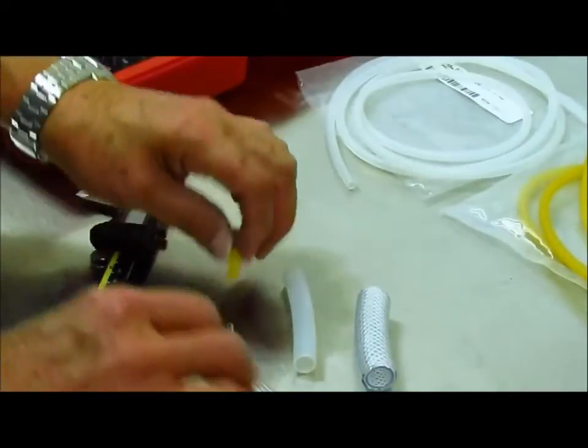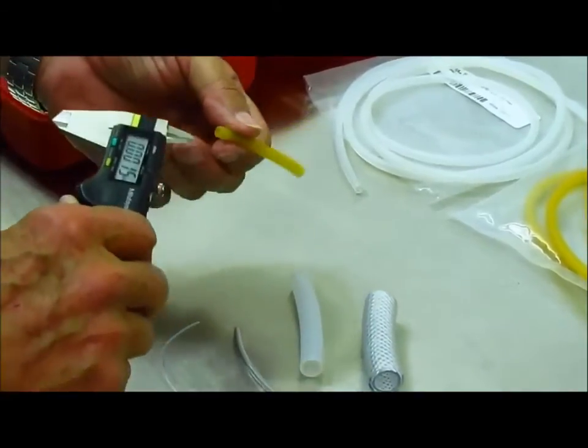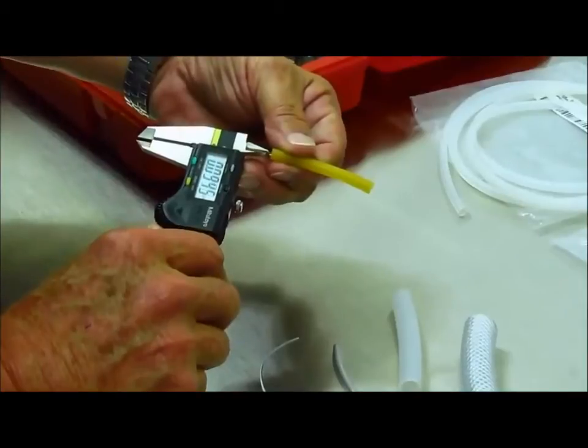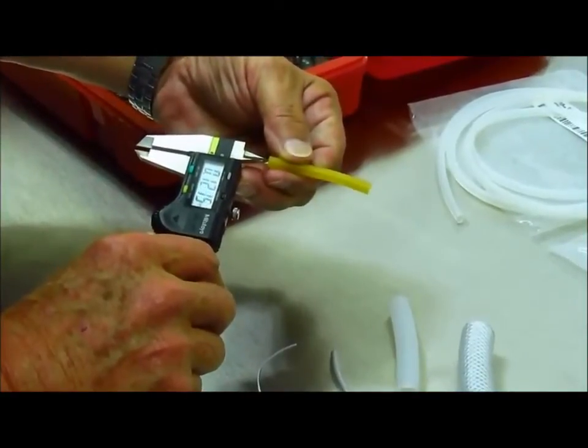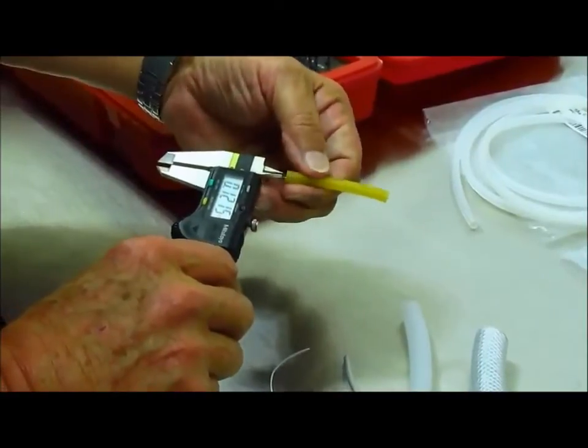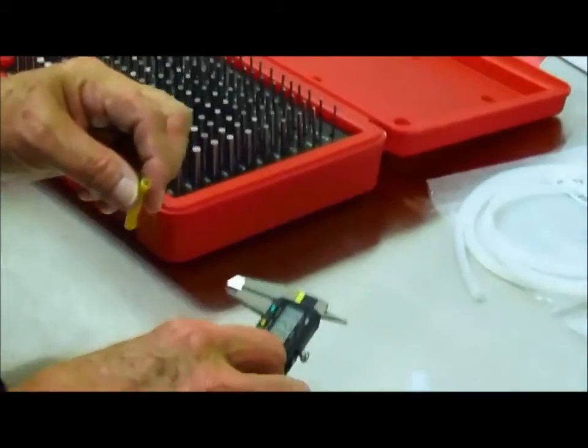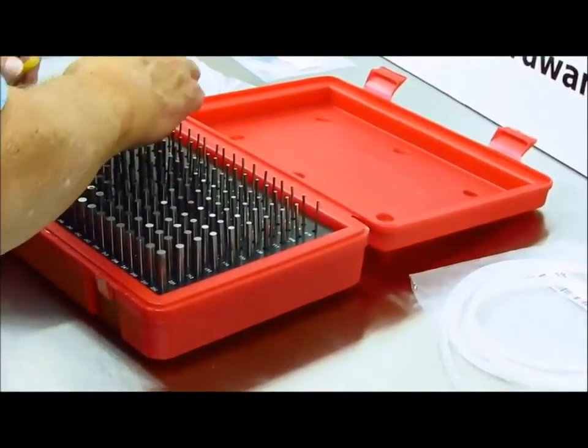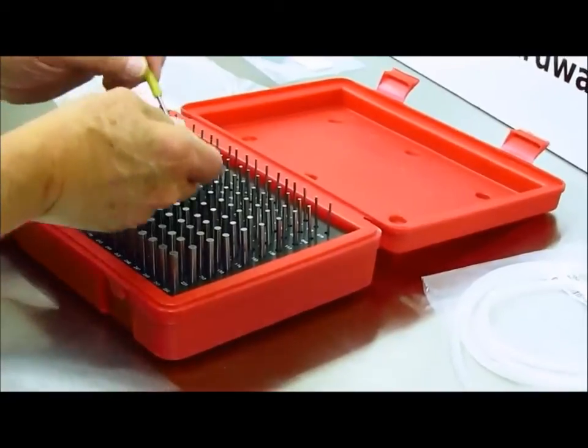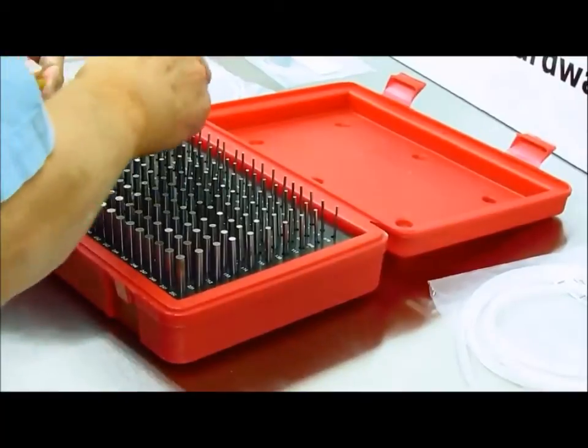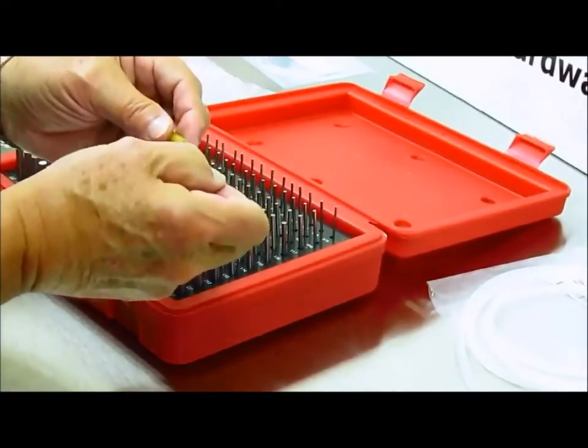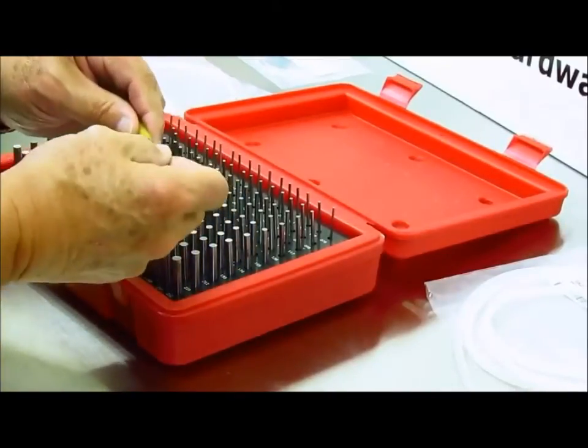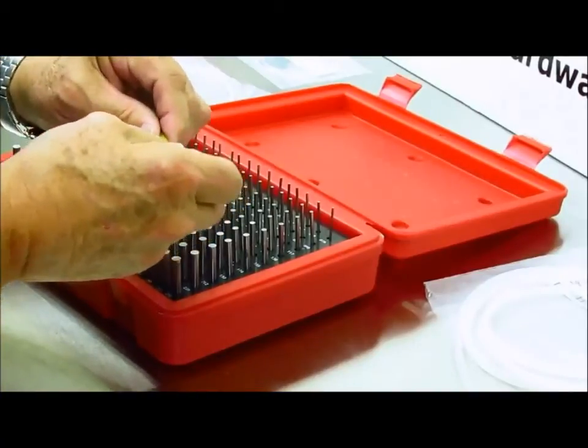Regardless of what type of tubing you're using, the starting point is always the same: to determine what the inside diameter is. Using a caliper, we'll do our best to get some general idea of what the inside of that tube is, coming up with about 0.121. So we'll find the 0.120 pin gauge and try it—it's actually fitting a little bit loosely, so we'll go up a couple thousandths. 0.122, starting to get pretty good. I think we'll try the 0.122.